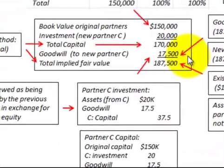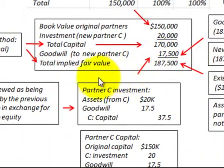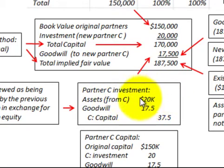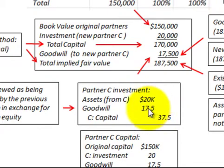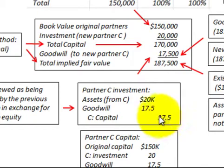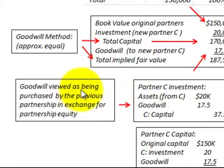Let's look at how we'd record partner C's investment. Assets received from partner C would be debited for $20,000. Then we record goodwill, which is debited for $17,500. And partner C's capital account would be credited for $37,500. This goodwill is viewed as being purchased by the previous partnership in exchange for partnership equity.